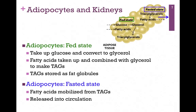Let's look at adipocytes next. In the fed state with excess fuel, adipocytes take up glucose, which gets converted to glycerol to provide a backbone for forming triacylglycerols. Fatty acids are also taken up and combined with glycerol to make triacylglycerols — our primary storage form for lipids — stored as fat globules. In the fasted state, adipocytes mobilize fatty acids by hydrolyzing the triacylglycerols and releasing the fatty acids into circulation.